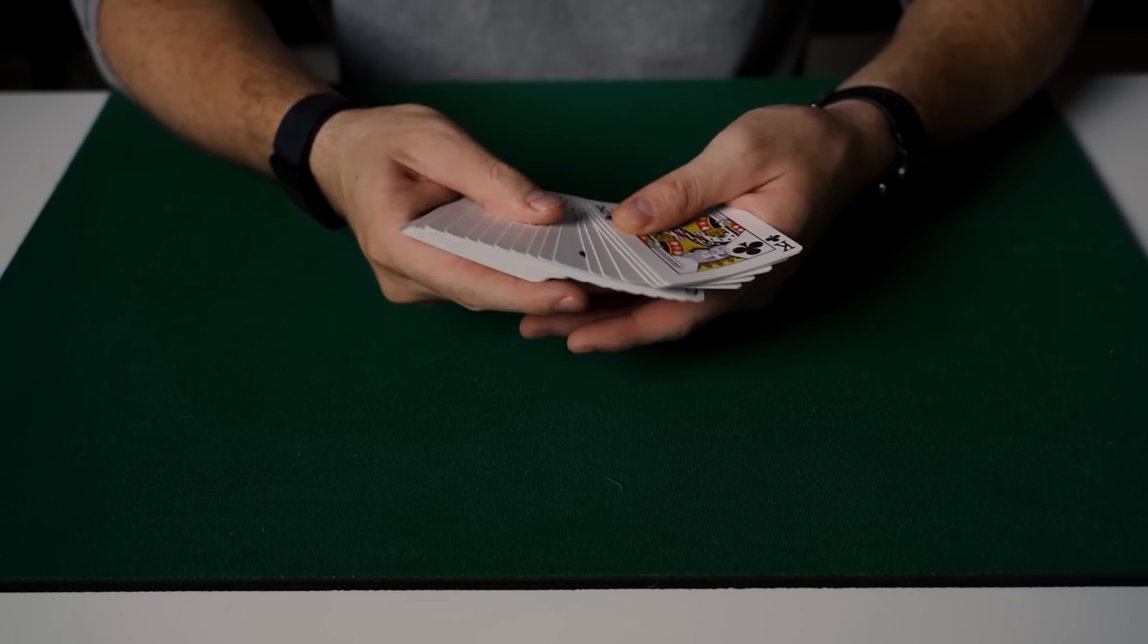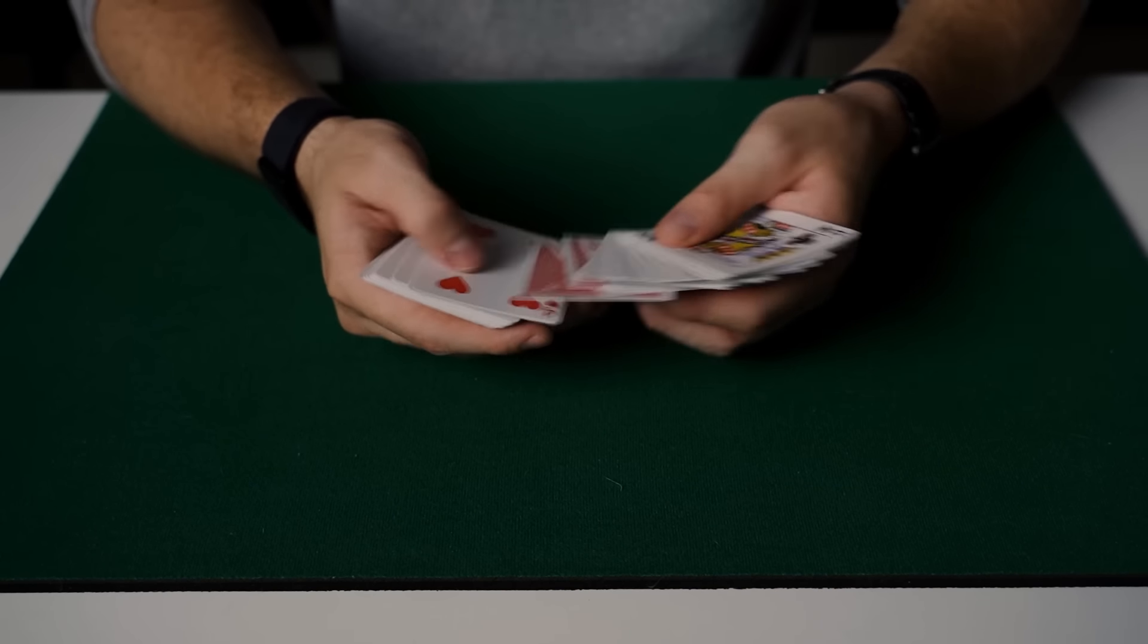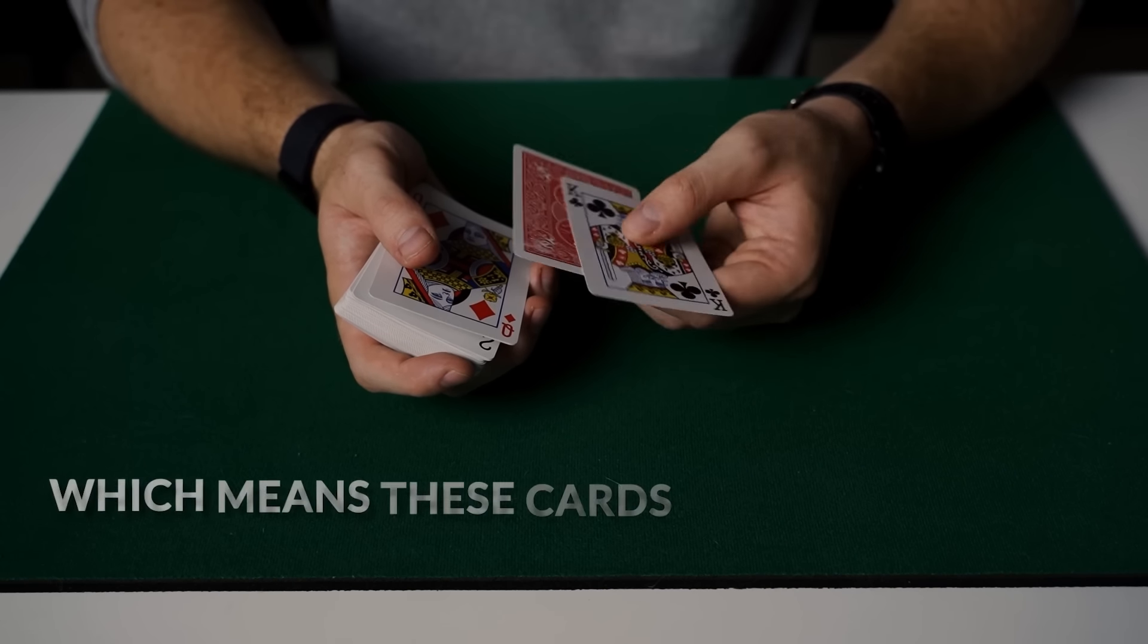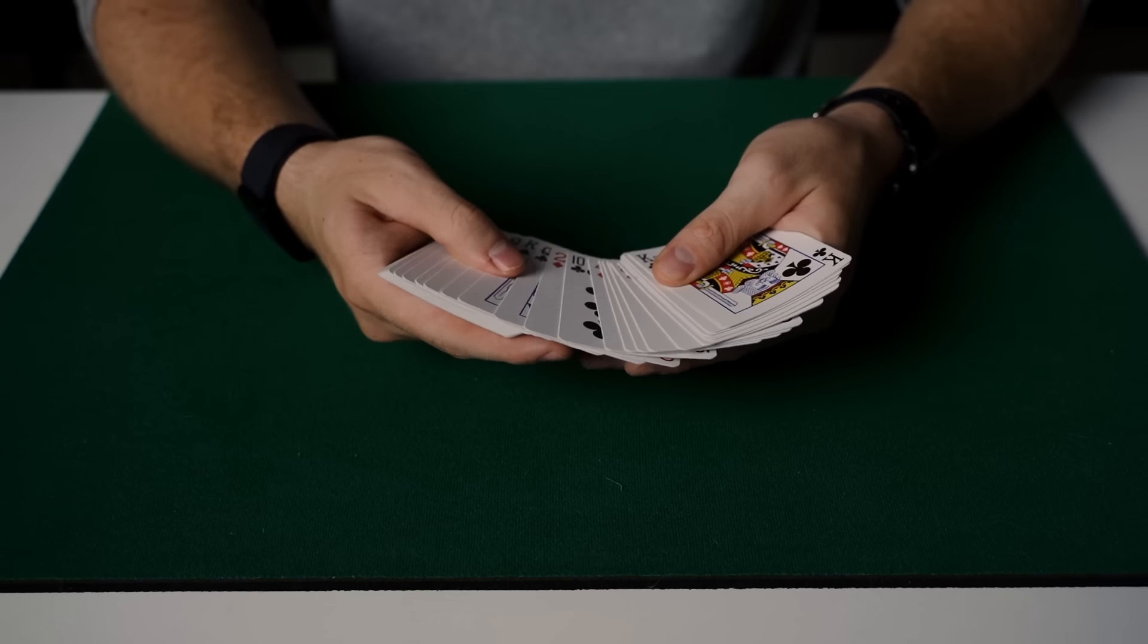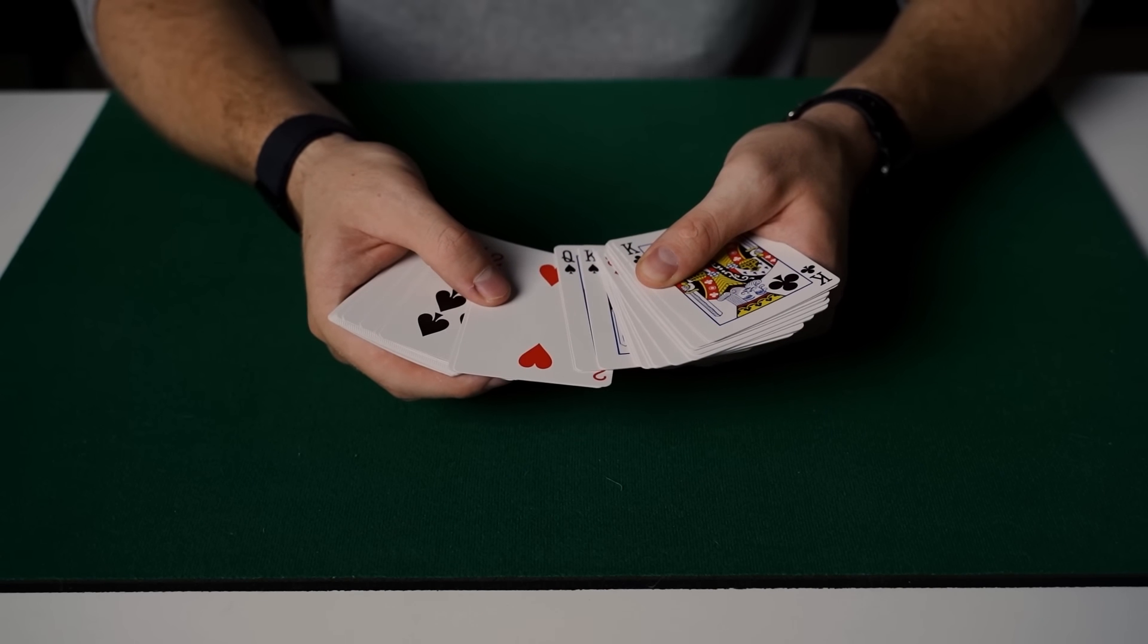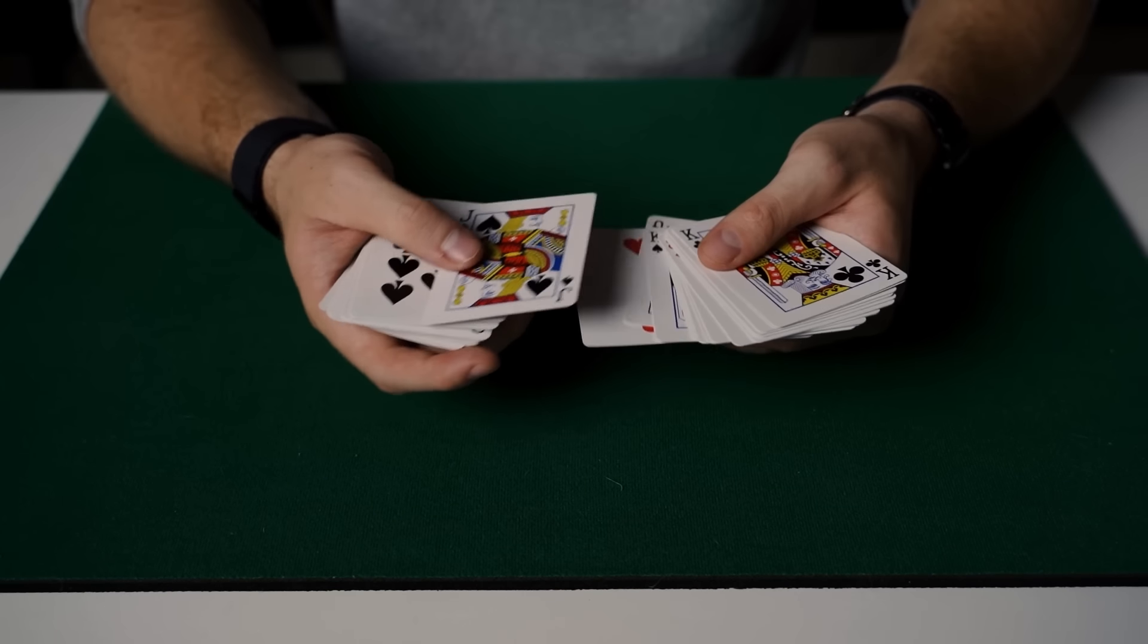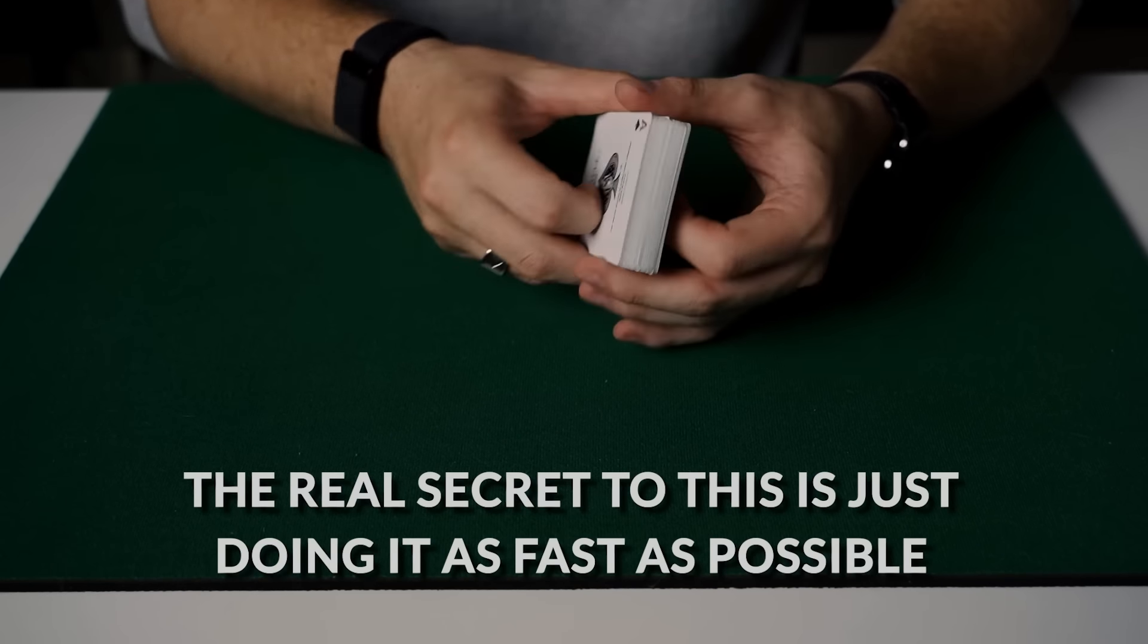Now you're probably wondering why when I spread through the cards, all these cards seem face-up and you can't see all the red cards that are face-down, all the pairs. And the reason for that is each card has a very rough backing on it, which means these cards essentially stick to each other unless they're really pushed. So I can go through all the cards and then let's just say I wanted the card that's behind the 2 of Hearts, which will be the Jack of Spades. I can just push down on the 2, and reveal the card behind it and it will be the Jack of Spades. So the real secret to this is just doing it as fast as possible.